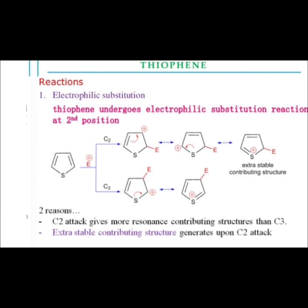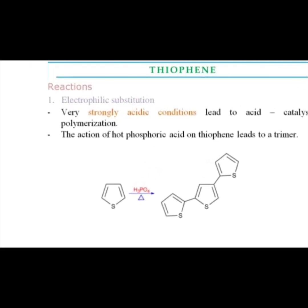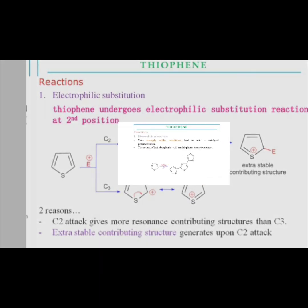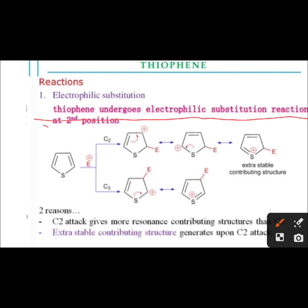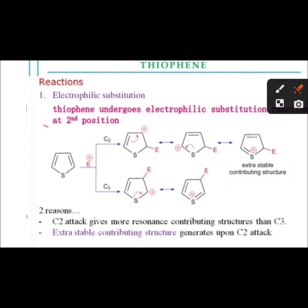Now see the electrophilic substitution reaction of thiophene. Thiophene undergoes electrophilic substitution at the second position. When the electrophile attacks the second position, there are three resonating structures. When attack is on the third position, there are only two resonating structures. C2 attack gives more resonance contributing structures; extra stable contributing structures are generated upon C2 attack.